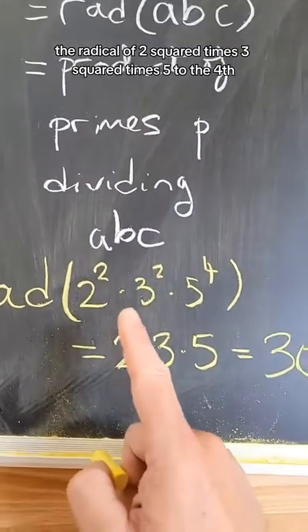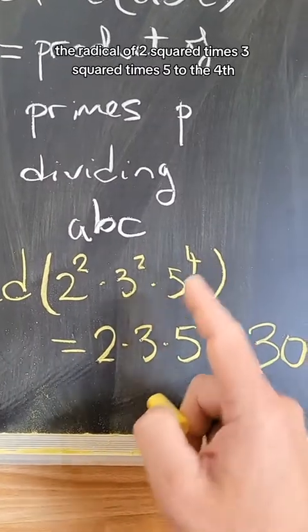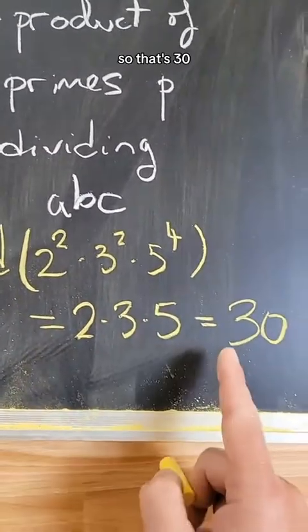So, for example, the radical of 2 squared times 3 squared times 5 to the fourth would be just 2 times 3 times 5, so that's 30.